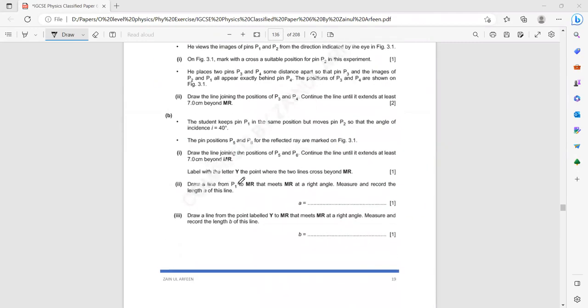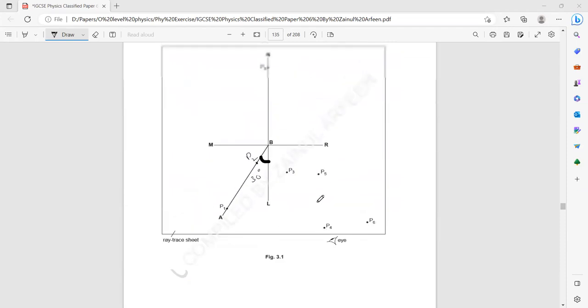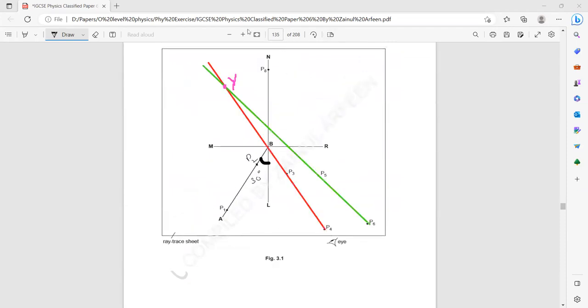Then draw a line from P1 to MR that meets MR at a right angle and measure and record the length. And then draw a line from Y perpendicular and measure that length as B. So we will draw a line from pin 1 to MR and that line should be perpendicular. We call this line A. The length of this line is referred to as A. Then draw a line joining Y with MR perpendicular and we call that as B. And we have to measure these lengths for A and B.